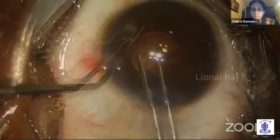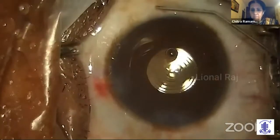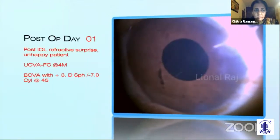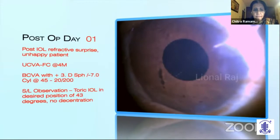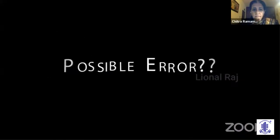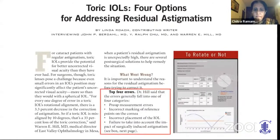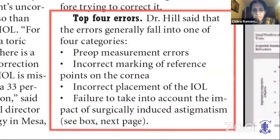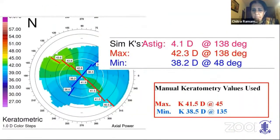Perhaps the patient was not happy. On post-operative day one, there was a refractive surprise of plus 3 diopters sphere and minus 7 diopters cylinder at 45 degrees, with the IOL in the specified axis position of 43 degrees. Warren Hill has described four possible errors with misaligned toric IOLs, of which interchanged axes is an important source of error in our case.